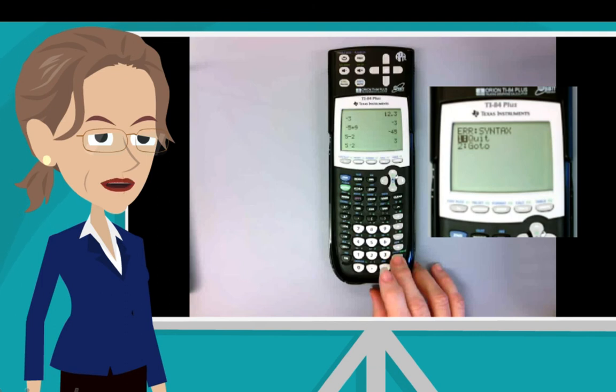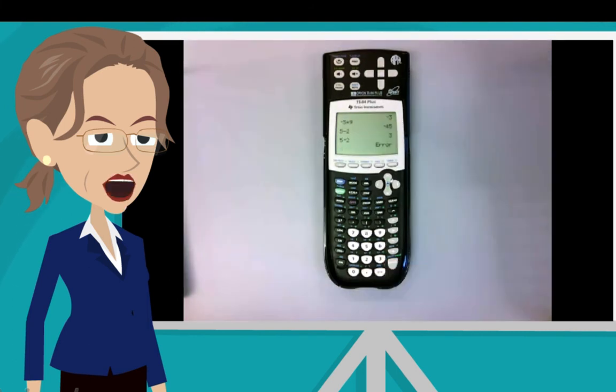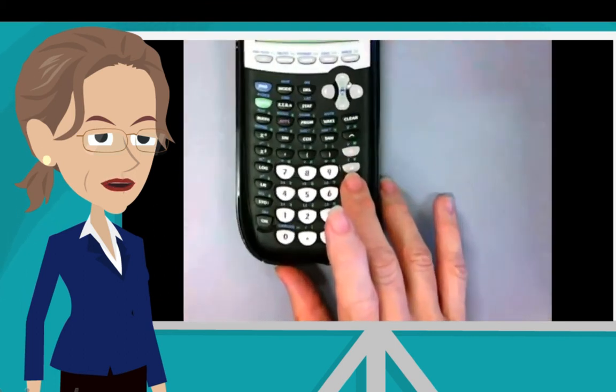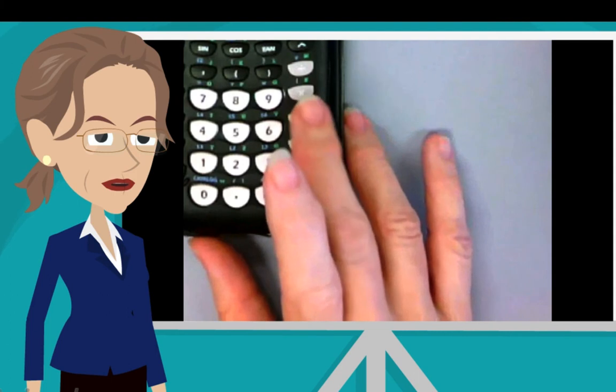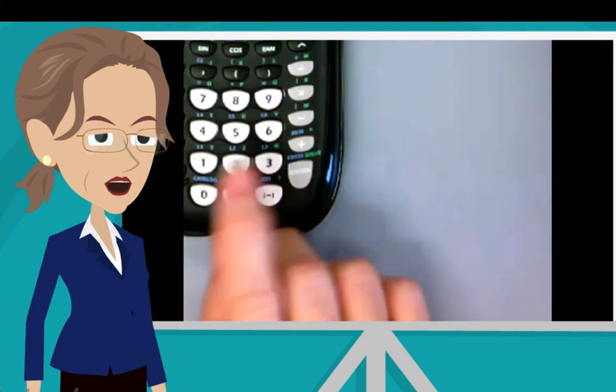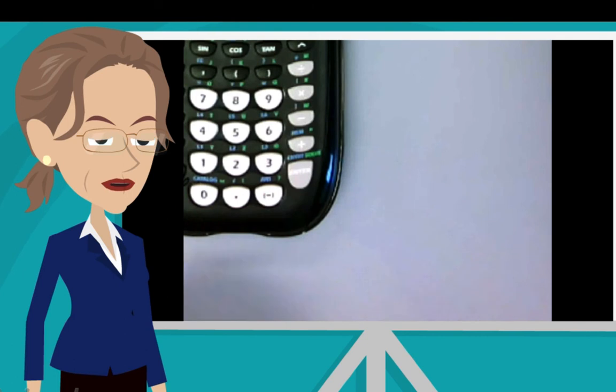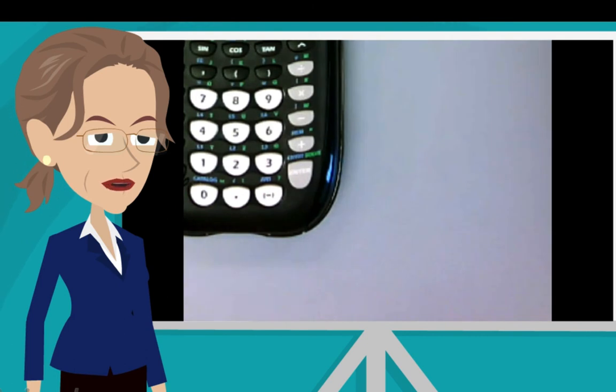Wow, I certainly don't want a syntax error. So yes, I am going to quit. If you need to subtract, use the subtraction key in the far right column with the other operations. If you need to make a number negative, use the negative symbol key on the bottom row of keys.